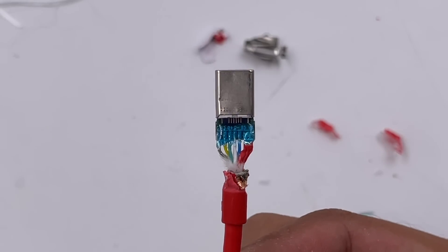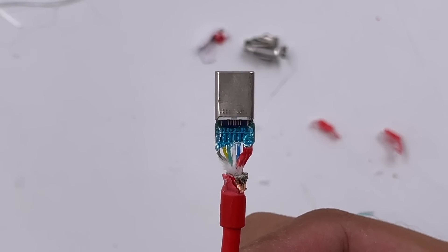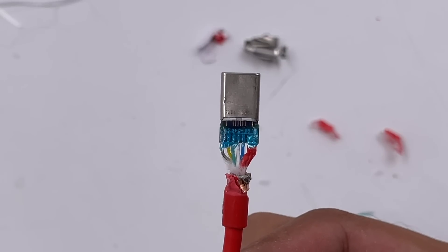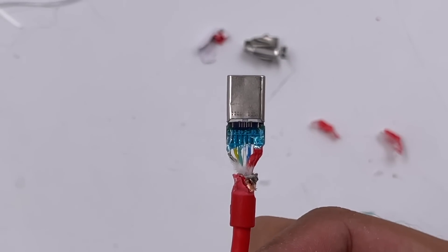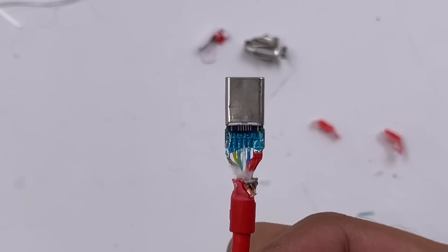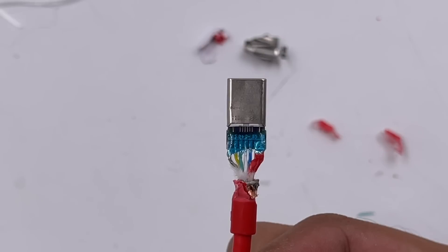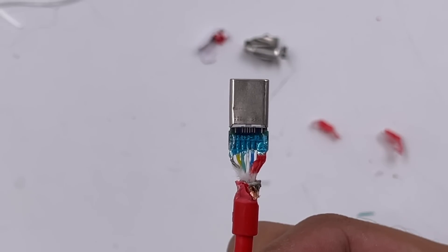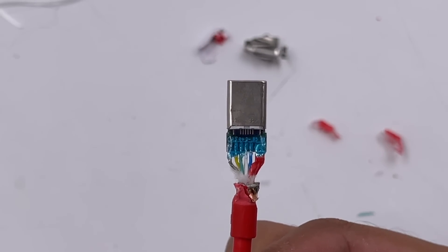Let's introduce those wires. The silver wire is the ground wire. The yellow and blue wire is CC1 and CC2, which are configuration channels. The green and white wire is D plus and D minus, which are responsible for data transmission. Two red wires are VBus power.